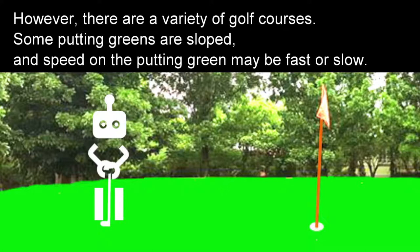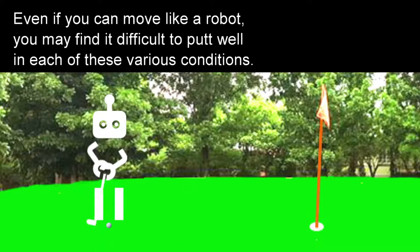However, there are a variety of golf courses. Some putting greens are sloped, and speed on the putting green may be fast or slow. Even if you can move like a robot, you may find it difficult to putt well in each of these various conditions.